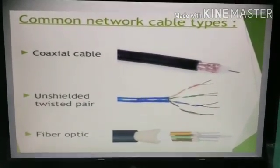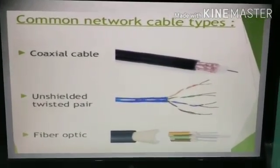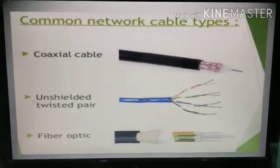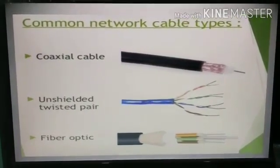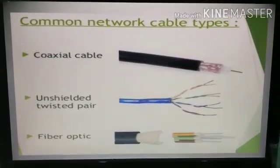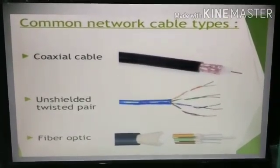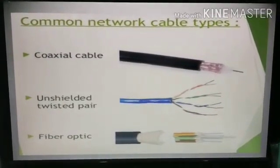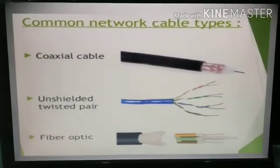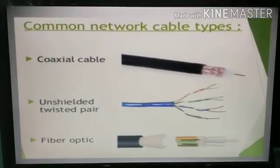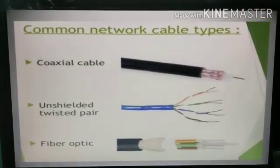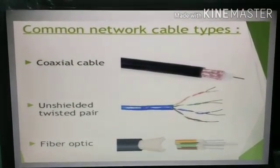Next type of cable is optical fiber cable. It is similar to coaxial cable. It uses electrical signal to transmit data. At the center is the glass core through which light propagates. The core in fiber optical cable is surrounded by glass cladding with a lower index of refraction compared to the core, to keep all the light in the core.